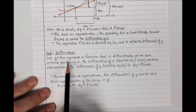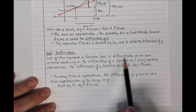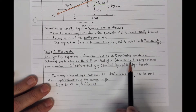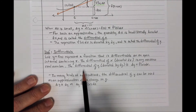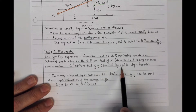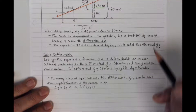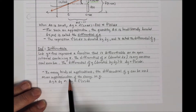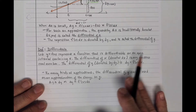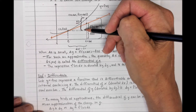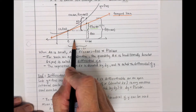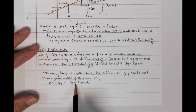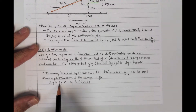Differentials are variables. Let Y = F(X) be differentiable on an open interval containing X. The differential of X, denoted DX, is any non-zero real number — that's what we called delta X. The differential of Y, denoted DY, is equal to F prime of X times DX. The differential DY can be used to approximate delta Y, so we say delta Y is approximately DY, or approximately F prime of X times DX.